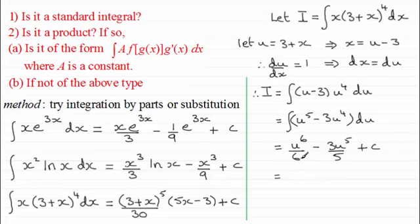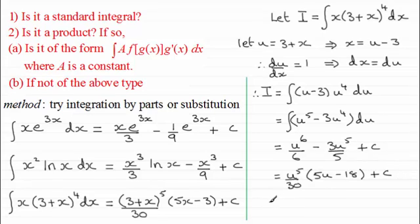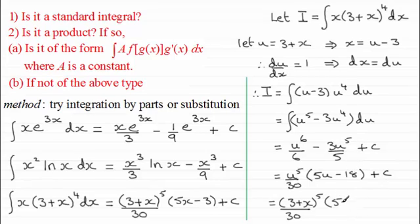Next I'd put this all over the lowest common multiple of 6 and 5, which is 30, and pull out a common factor of u^5 on the top. So it's u^5/30 times (5u − 18), plus c. Then replacing u with 3 + x, I get (3+x)^5/30 multiplied by 5(3+x) − 18, which gives 15 + 5x − 18, leaving 5x − 3, plus the constant c. If you're unsure of substitution, do go back and see in more detail how to do it in my video tutorials.